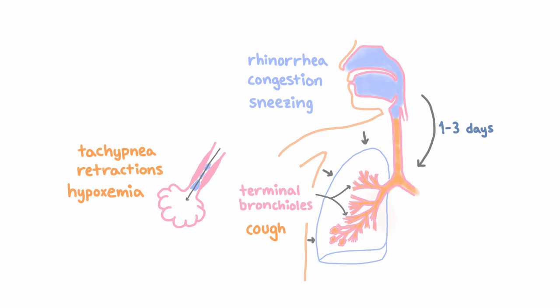The virus can actually get past the terminal bronchioles into the alveoli and infect the alveoli — that's what we call pneumonia. In that case, you can also see tachypnea and low oxygen levels. And in practice, it's pretty difficult to distinguish between bronchiolitis and pneumonia with RSV.